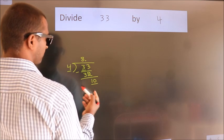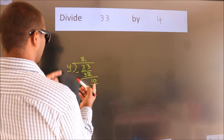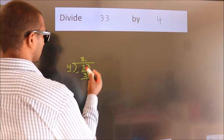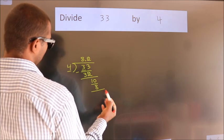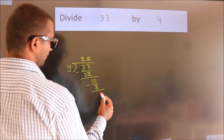So 10. A number close to 10 in the 4 table is 4 times 2 equals 8. Now we subtract, we get 2.